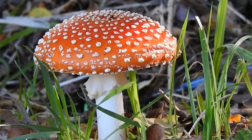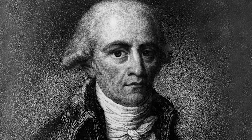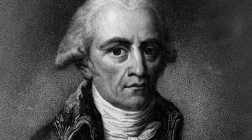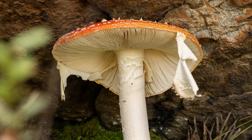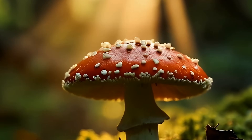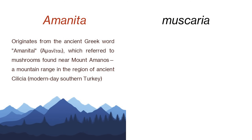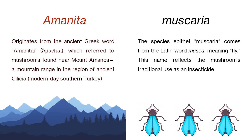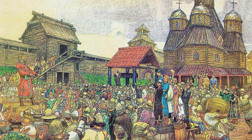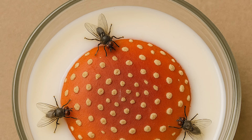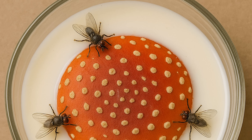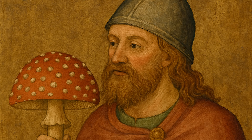The name Amanita traces back to antiquity and was formally established as a genus in 1783 by the French naturalist Jean-Baptiste Lamarck. He recognized it as a distinct group of gilled mushrooms, many of which are renowned for their striking appearance and potent bioactive compounds. The genus name is thought to derive from the ancient Greek word Amanitae, referring to mushrooms growing on Mount Amanos, although the exact etymology remains debated. The species name muscaria comes from the Latin musca, meaning fly, reflecting the mushroom's traditional use as an insecticide. Across parts of Europe, particularly in Germanic and Slavic regions, people would crush the vivid red cap and soak it in milk to attract and kill flies. This folk practice gave rise to the common name fly agaric.